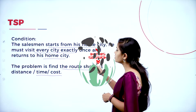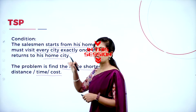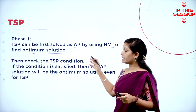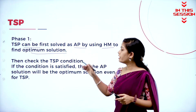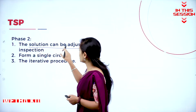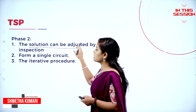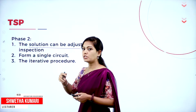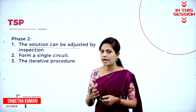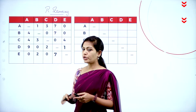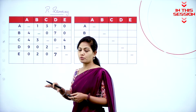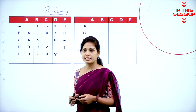First you have to understand the conditions in the travelling salesman problem. With the help of assignment by the Hungarian method we can solve this travelling salesman problem. The solution can be adjusted by inspection — we have to modify the solution, we have to modify the assignment. In every row you have to assign zeros and in every column you have to assign zeros.